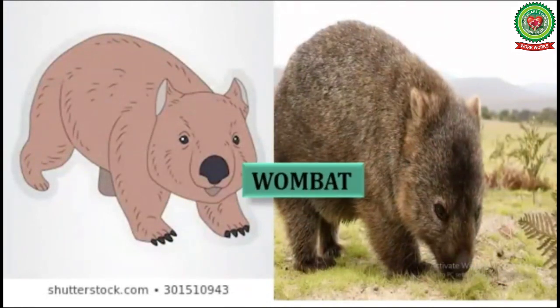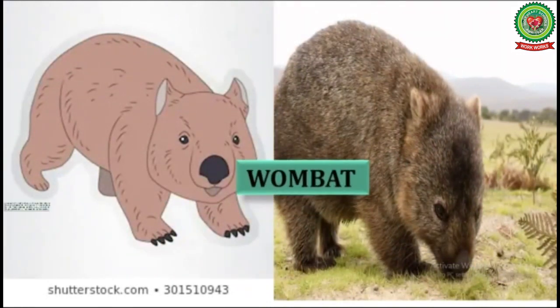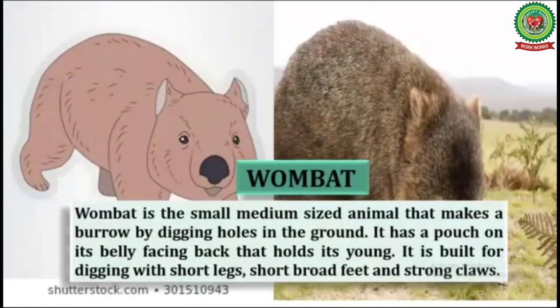Number four is wombat. The wombat is a small to medium-sized animal that makes a burrow by digging holes in the ground. It has a pouch on its belly facing back that holds its young. It is built for digging with short legs, short broad feet, and strong claws.